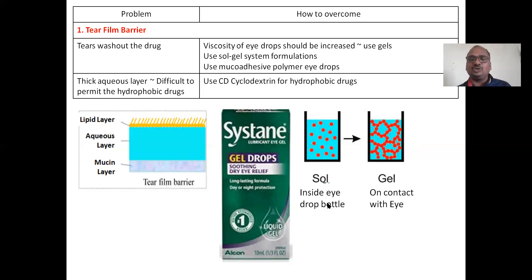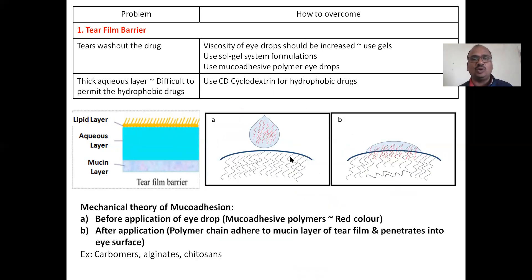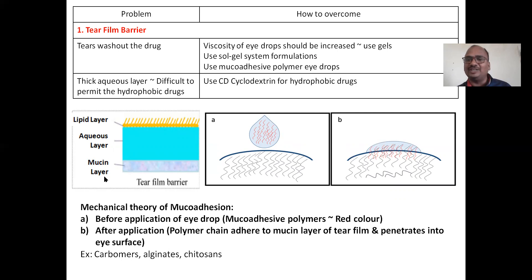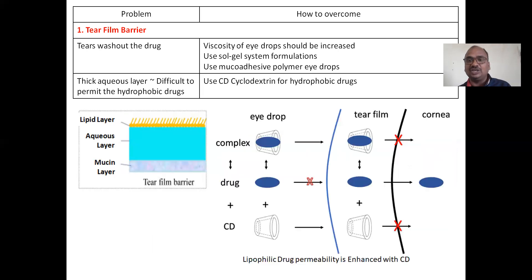Viscosity of eye drops should be increased — use gels. Next, use a sol-gel system: in the bottle it looks like a solution, but after instilling into the eye it converts into a gel on contact, holding the drug firmly so the tear film cannot wash it away. Also use mucoadhesive polymer eye drops. Mucoadhesive polymers contain polymer chains that adhere to the mucin layer of the tear film, holding firmly. Examples include carbomers, alginates, and chitosans.